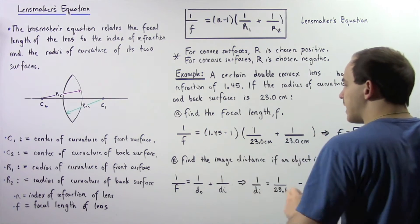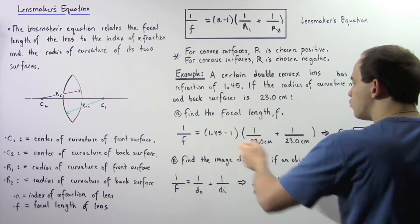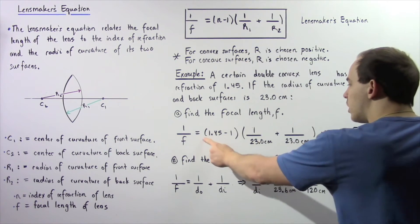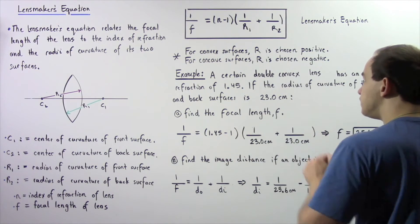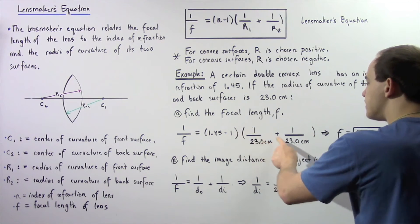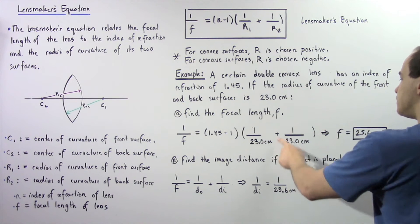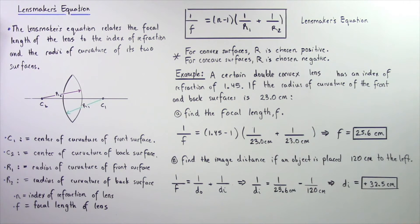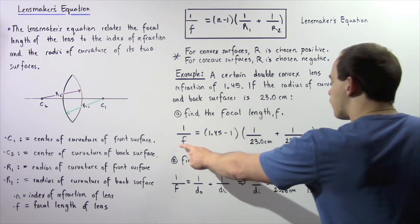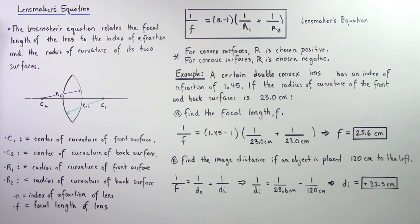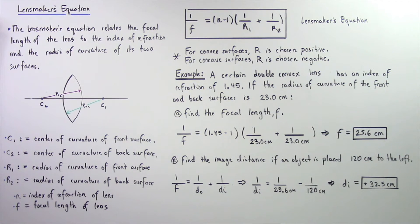Applying the lens maker equation: 1 divided by the focal length equals (1.45 − 1) multiplied by (1/23 cm + 1/23 cm). Solving for F, the focal length is approximately positive 25.6 centimeters. Notice that because we are dealing with a convex lens, the focal length is indeed positive.